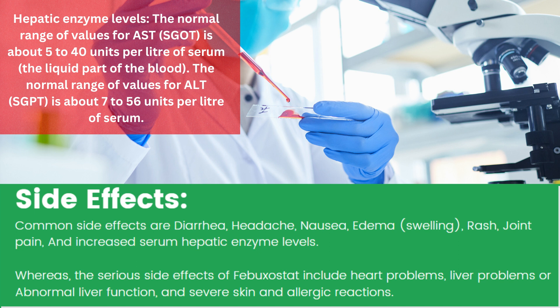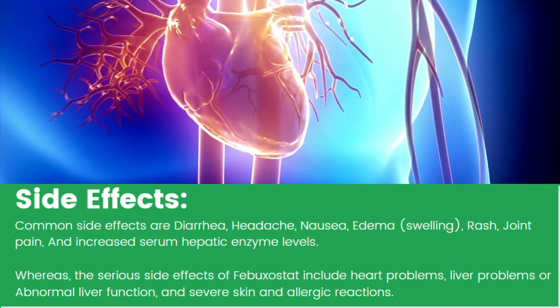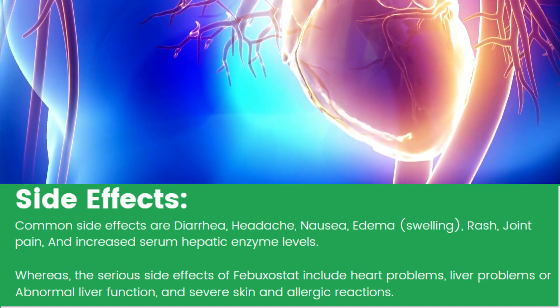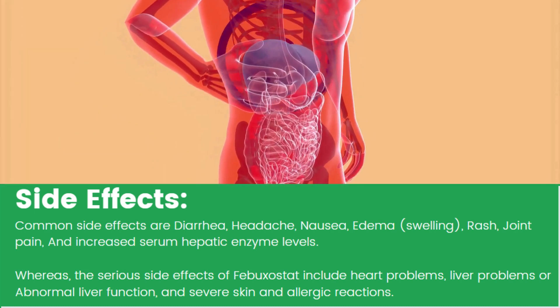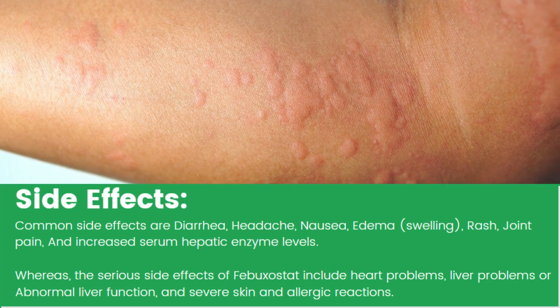Hepatic enzyme levels: The normal range for AST (SGOT) is about 5 to 40 units per liter of serum. The normal range for ALT (SGPT) is about 7 to 56 units per liter of serum. Serious side effects of Febuxostat include heart problems, liver problems or abnormal liver function, and severe skin and allergic reactions.